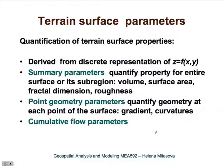What kind of terrain surface parameters do we have? Terrain surface parameters are used to quantify terrain surface properties. They are derived from a discrete representation of a bivariate function that is a mathematical model of the topography. We can distinguish several types of parameters. First, there are summary parameters that quantify a property for an entire surface as a global parameter, or for its subregion as a zonal parameter. These types of parameters include volume, surface area, fractal dimension, or roughness.